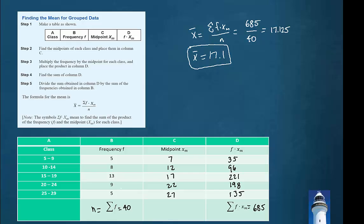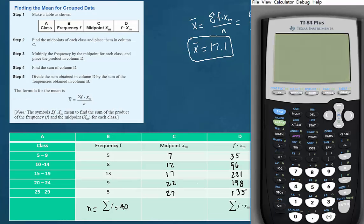Here we have a grouped frequency distribution for which we have estimated a mean by completing the table and using the formula. We can use the TI calculator to help expedite some of the calculations.